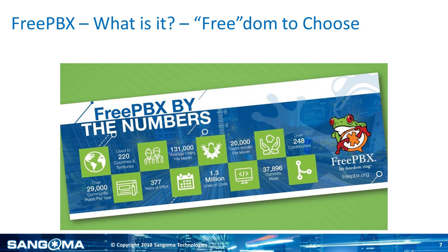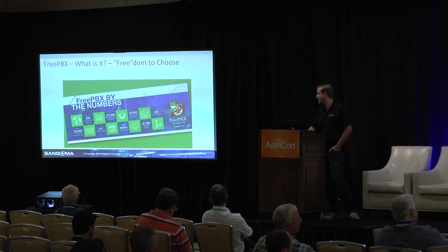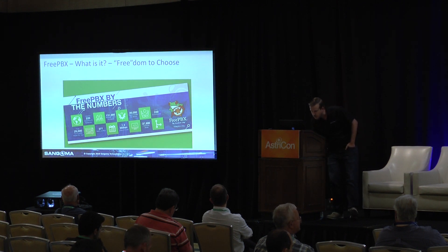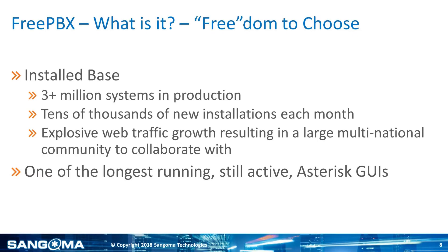These are some quick stats from a website called Black Duck Open Hub. You put an open source project in there, and it aggregates stats about that project. Over 248 contributors since 2004, and 1.3 million lines of code. They're saying it would take one developer 377 years of effort to build FreePBX. There are 29,000 community posts per year from our forums. Our install base is about 3 million systems in production actively running, with tens of thousands of new systems every month. That's also with the help of Sangoma Technologies, which is a global company.